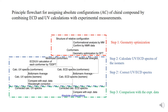Generally, ECD calculations and absolute configuration assignments can be divided into three steps. Firstly, conformational analysis of the compound gives the possible conformers. Secondly, the UV-ECD spectrum is calculated based on TDDFT for each conformer, and the spectra are Boltzmann averaged. Then, the averaged UV spectrum is shifted to conform to the experimental UV spectrum, and these shifts are applied to the corresponding calculated ECD spectrum before comparing the calculated ECD with the experimental ECD of the natural products. Finally, the experimental and calculated ECD data are compared to draw the conclusion.